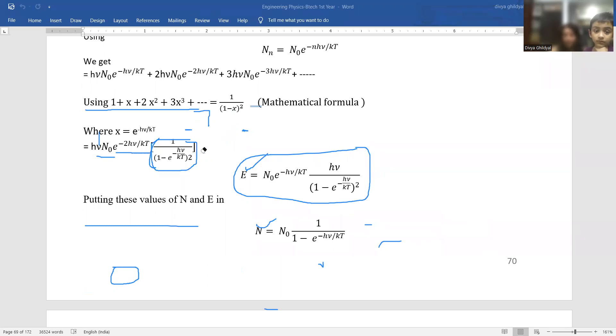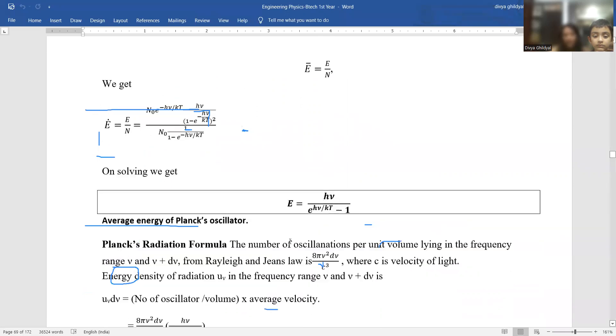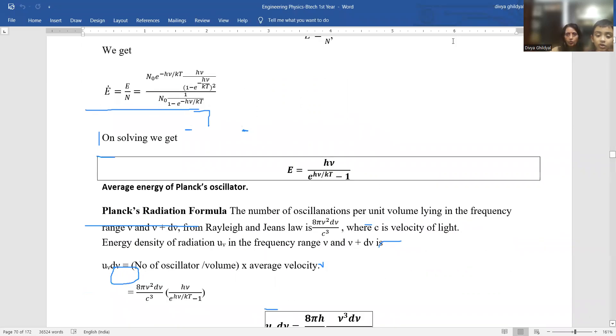We want the average, so we divide E by N to get average energy of Planck's oscillator. Ē = E/N. You put these values, N_0 gets cancelled, cross multiply this expression and you get Ē = hν/(e^(hν/kT) - 1). This is average energy of Planck's oscillator. It was a 10 mark question of section C.